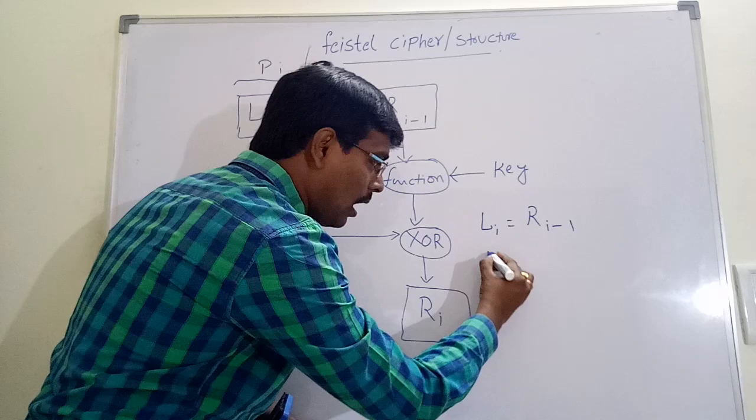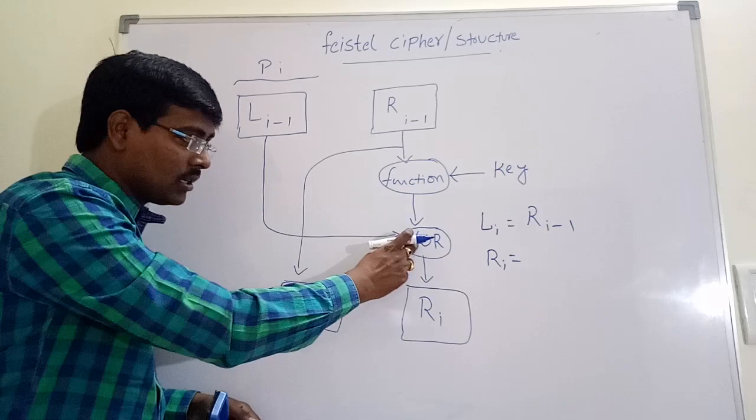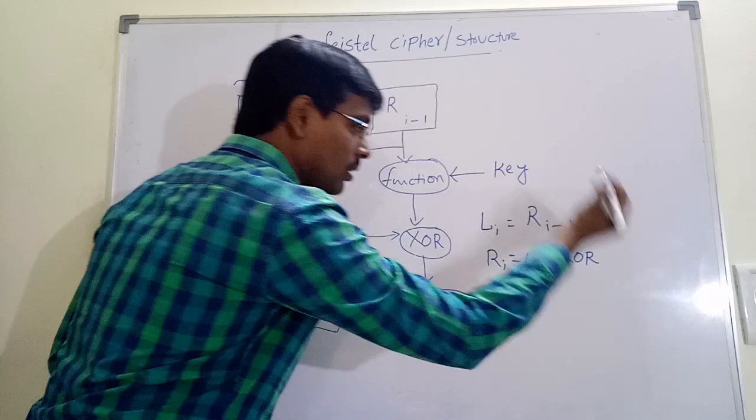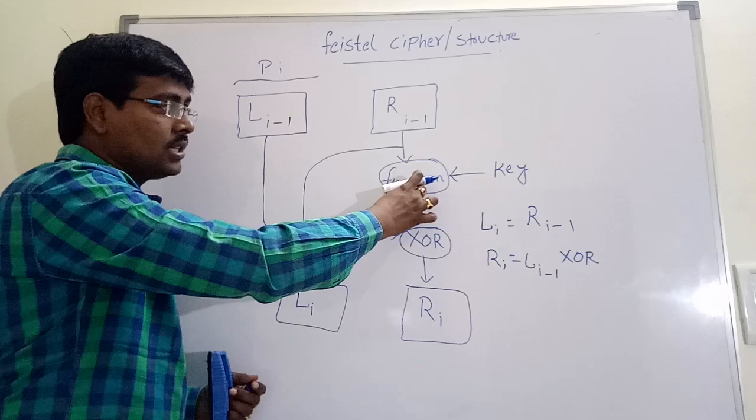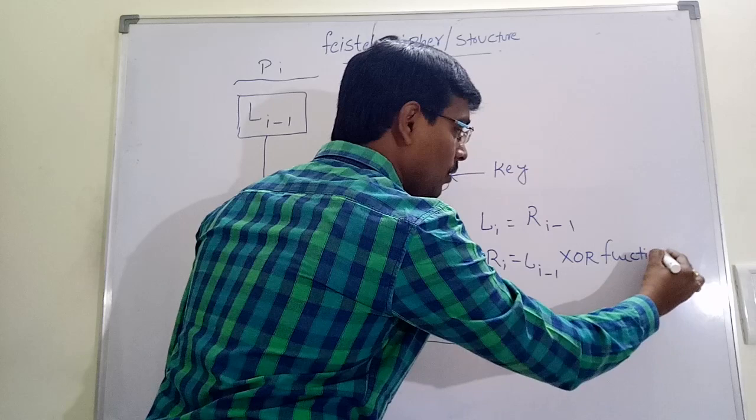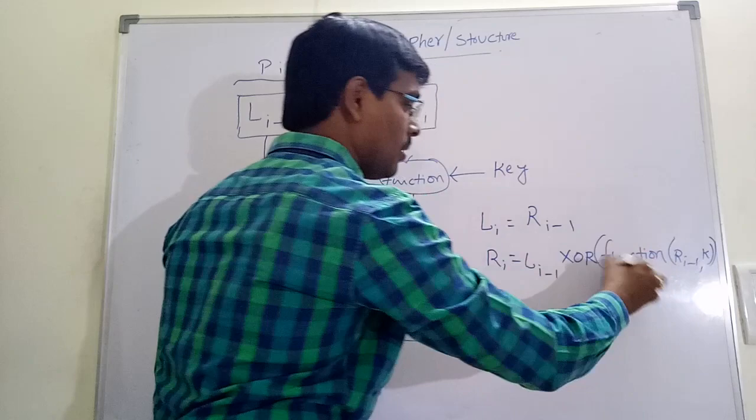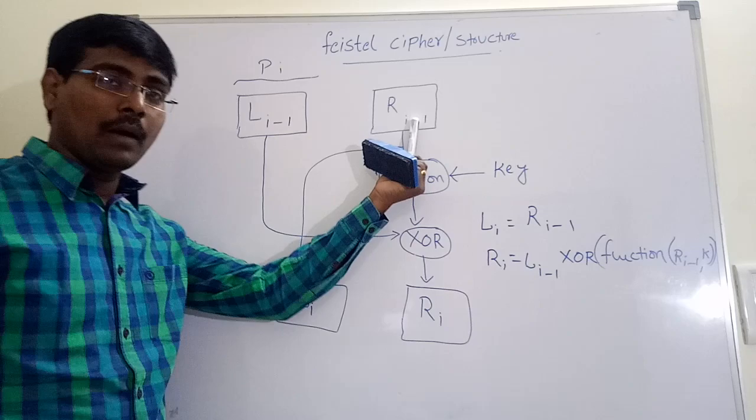And Ri is equal to Li-1 XOR with Li-1. One input is Li-1. And second input is F function. So XOR with function of Ri-1, comma, some key K. So Ri part is XOR of left iteration. And by applying some function to Ri-1. This is a Feistel Cipher.